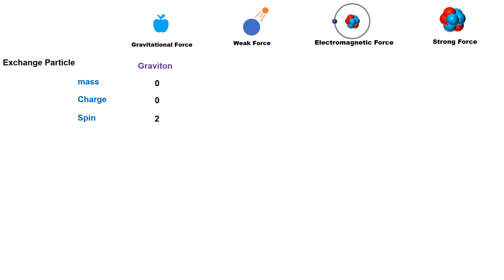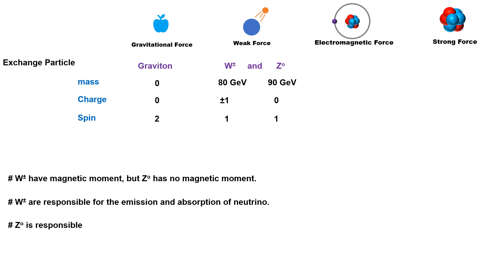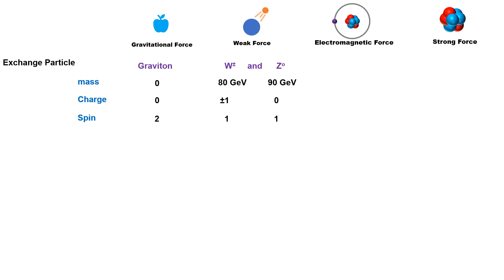The next force is weak force. Two exchange particles are defined for weak force: W boson and Z boson. W boson has mass around 80 GeV while Z boson has mass around 90 GeV. Both particles are spin-1 particles. W-plus and W-minus are charged particles and are antiparticles of each other, whereas Z boson is a neutral particle and is its own antiparticle. W-plus/minus bosons have magnetic moment, but Z boson has no magnetic moment. The W-plus/minus particle is responsible for absorption and emission of neutrinos in a reaction, while Z boson is responsible for transferring energy, momentum, and spin in a weak interaction.